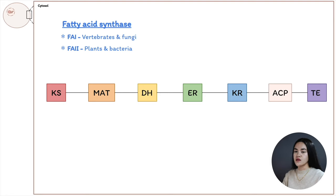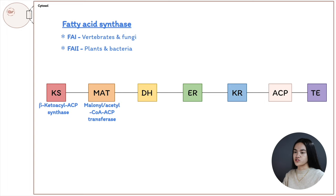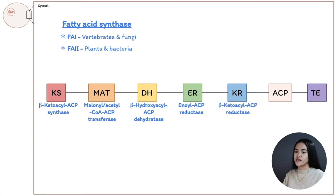Fatty acid synthase 1 is a polypeptide containing active sites for several enzymes in different domains: the KS domain (beta-keto-acyl-ACP synthase), MAT (malonyl-acetyl-CoA-ACP transferase), DH (beta-hydroxyacyl-ACP dehydratase), ER (enoyl-ACP reductase), KR (beta-keto-acyl-ACP reductase), and ACP (acyl carrier protein). There is also thioesterase (TE), which releases the palmitate product from ACP when synthesis is completed.